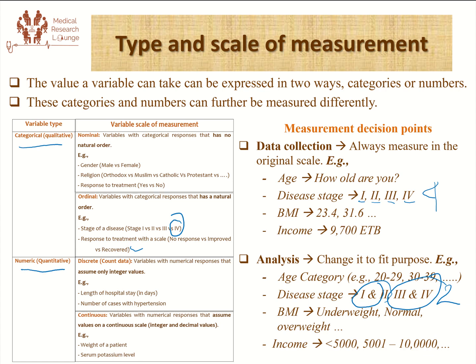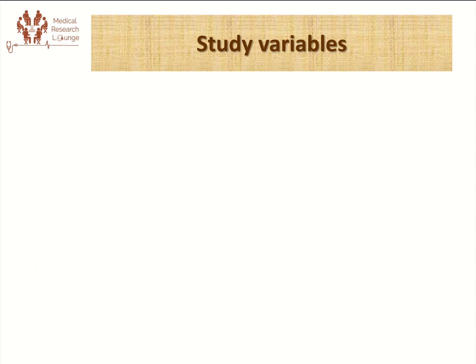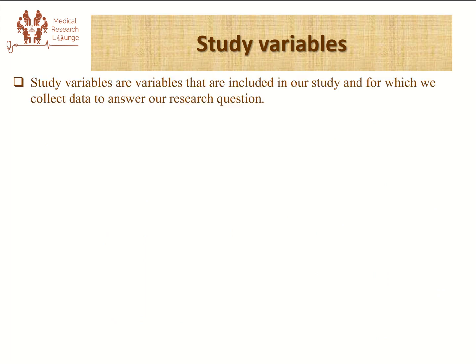When we narrow it down, this is all about variables in general, but our main interest is understanding study variables. Study variables are variables that are included in our study and for which we collect data to answer our research questions. These are just like any other variables described so far, but they are variables we are particularly interested in using for our study. The type of variables in my study will be different from those in someone else's study.